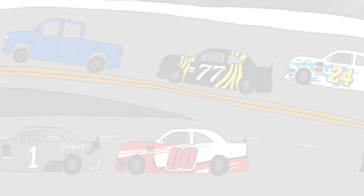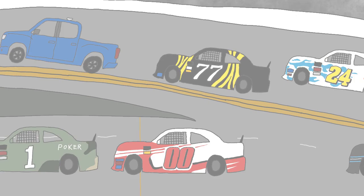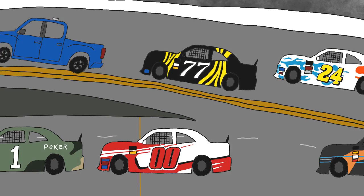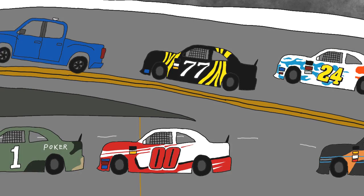Lights are out on the pace truck, and the leaders are coming into pit road. And the 77 of Justin Haley is staying out as the lights on the pace truck are back on. There is lightning in the area.